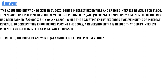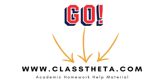While that adjusting entry recorded $1,600 of interest revenue, to correct this error before closing the books, a reversing entry is needed that debits interest revenue and credits interest receivable for $400. Therefore, the correct answer is A — $400 debit to interest revenue.